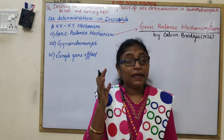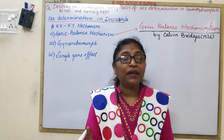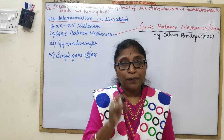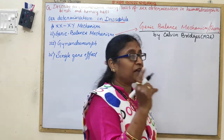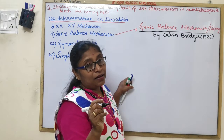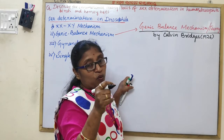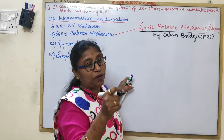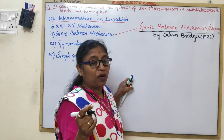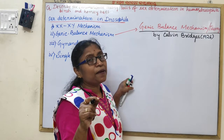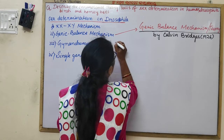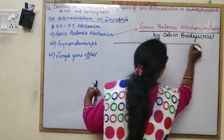The Genic Balance Theory was proposed by Calvin Bridges in 1926. This theory states that the ratio between the number of X chromosomes and the number of sets of autosomes determines the sex of the offspring.